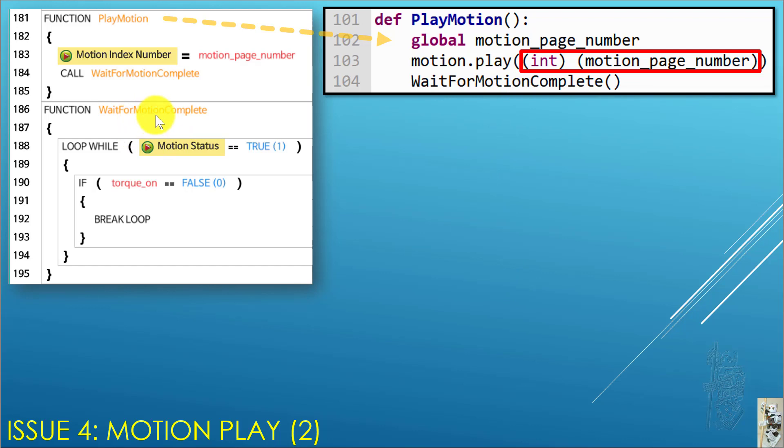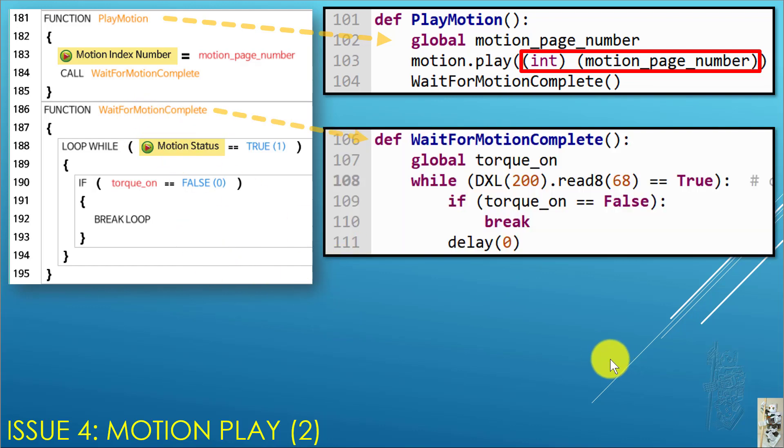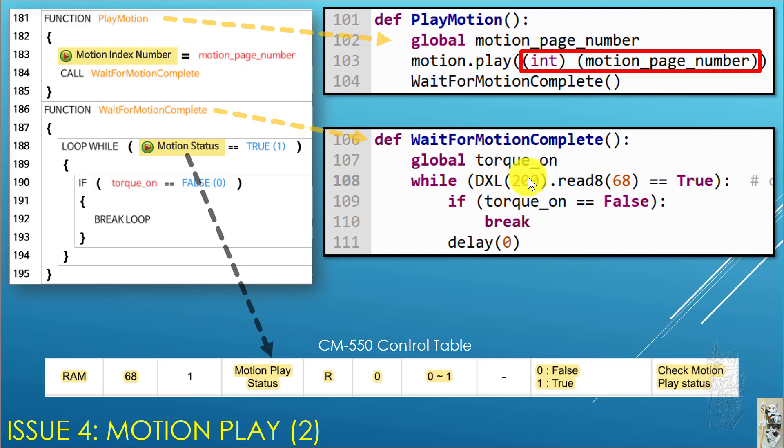In the next function called wait for motion complete, using motion status instead. So motion status, that loop while there is translated to this. So how do I find out how to convert to the MicroPython equivalent? I go to the CM550 control table and look for a variable for motion play status. I found that the address is 68, its size is 1, it's a read-only parameter, and the result is true or false. So that's why I use DXL200, which represents the Dynamixel ID assigned to the CM550. Because I'm reading a byte, so I read 8, and the address is 68. And whatever I got from there, I compare this to true, which is the same thing as this loop while here.